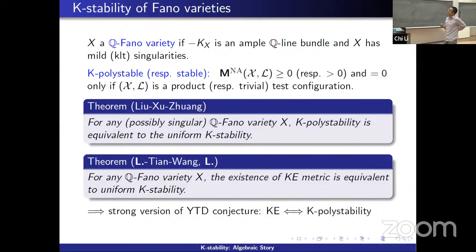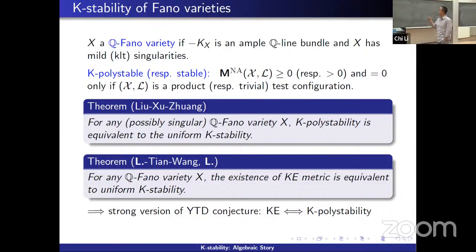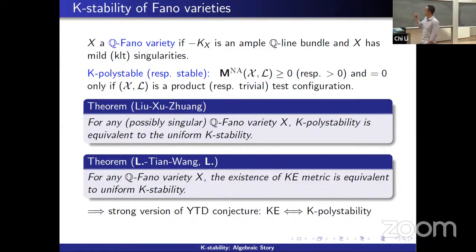The YTD conjecture has been generalized to work for all Q-Fano varieties. This is the result of myself with Tian and Wang, and myself regarding the case of continuous automorphism groups. So now we know that for any Fano variety, the existence of a Kähler-Einstein metric is equivalent to uniform K-stability. In our results we use the strengthened K-stability, but combining these results gives a very satisfactory answer to the YTD conjecture: existence of Kähler-Einstein metrics is equivalent to K-polystability. This works for any possibly singular Fano variety.